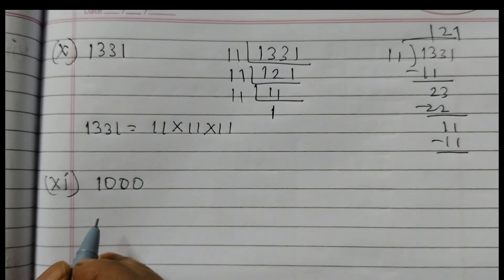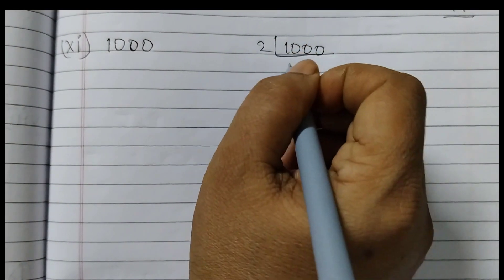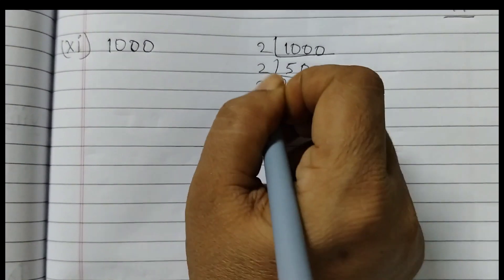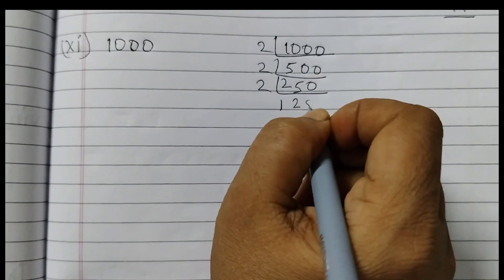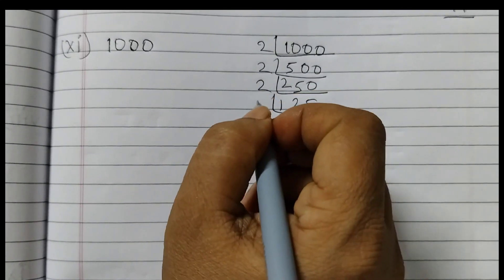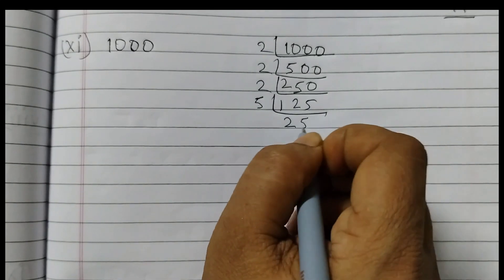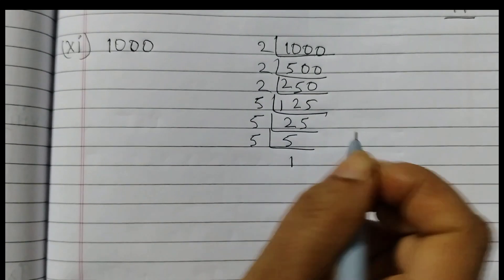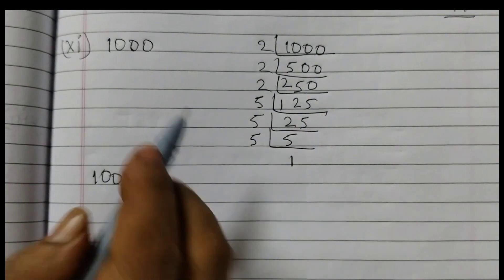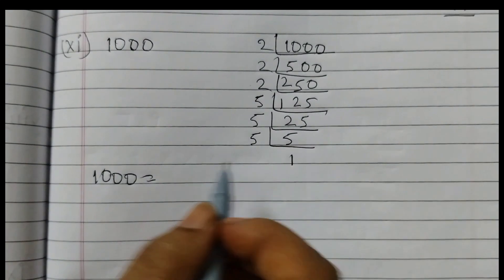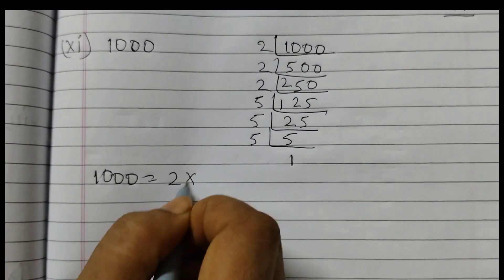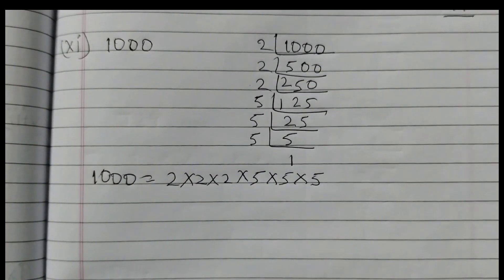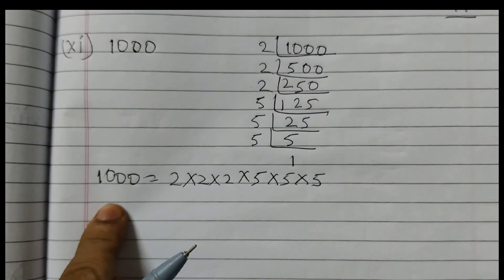And the last one is 1000. Start with 2: 1000 ÷ 2 = 500, 500 ÷ 2 = 250, 250 ÷ 2 = 125. Now 125 goes by 5: 125 ÷ 5 = 25, 25 ÷ 5 = 5, 5 ÷ 5 = 1. So 1000 can be written as 2 × 2 × 2 × 5 × 5 × 5 — 2 is written 3 times and 5 × 5 × 5. This is the prime factorization of 1000.